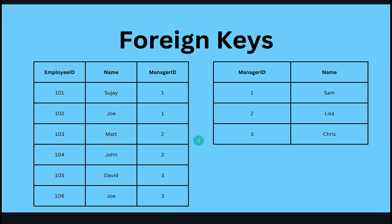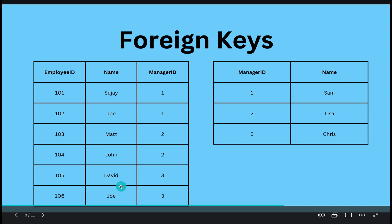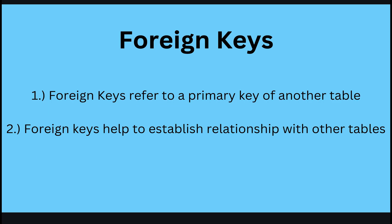This manager ID — the foreign key — is helping us to establish a connection with the manager table. Sujay and Joe report to manager Sam. Matt and John have manager ID two, which refers to Lisa, so they report to Lisa. David and Joe have manager ID three, which is Chris, so David and Joe report to Chris.